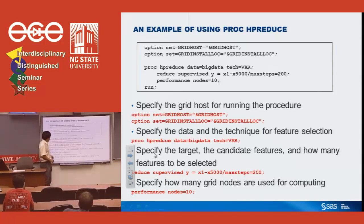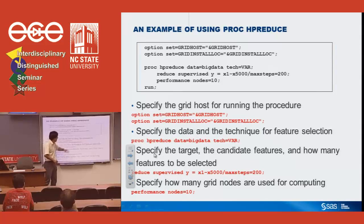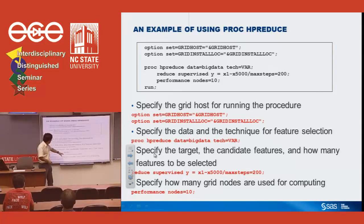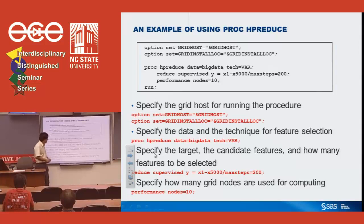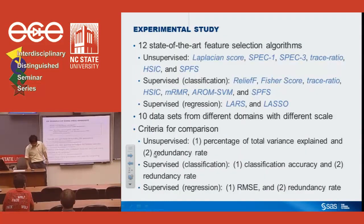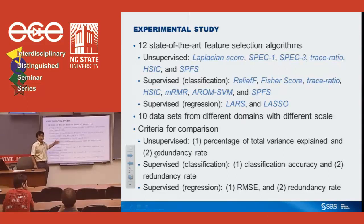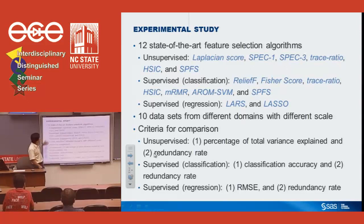HP Reduce is implemented as a SAS high-performance analytical procedure supporting both SMP mode (single machine with multiple cores) and MPP mode (massively parallel processing across a grid). It also supports distributed database systems like Greenplum, Teradata, and the Hadoop file system, enabling parallel data loading into memory and fast parallel computation. The procedure is specified with grid host, input data, technique, model (candidate features and number to select), and number of grid nodes.